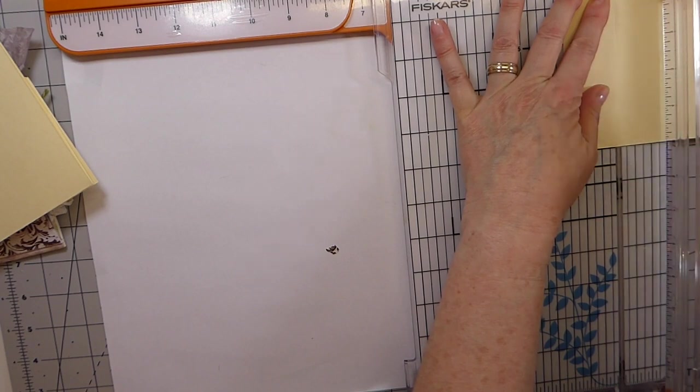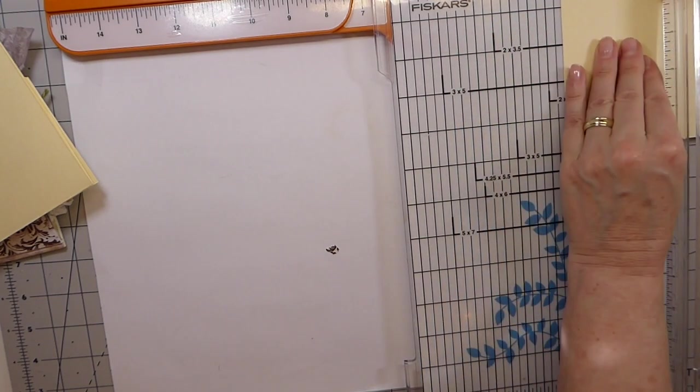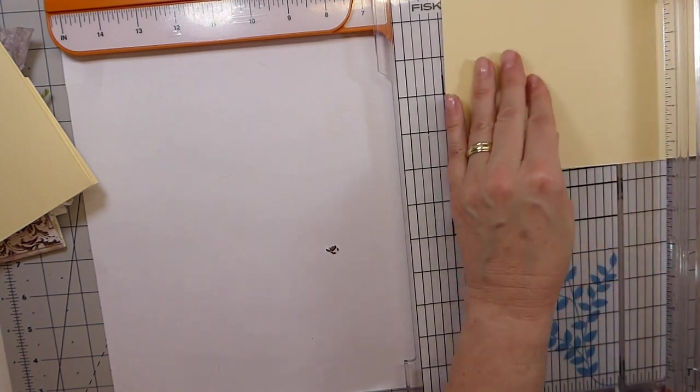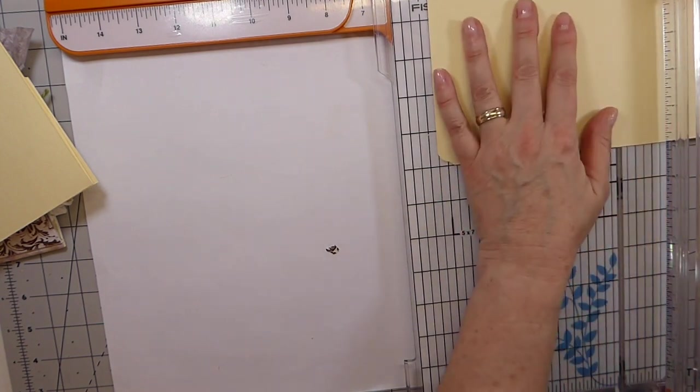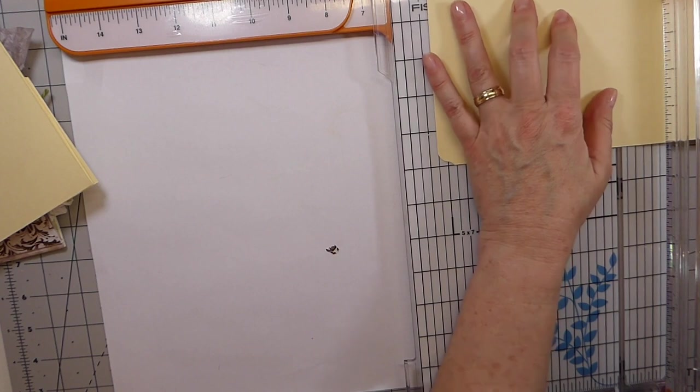Starting with that longest piece, we're going to score that at one and a half inches. If you find it easier with your scoreboard, do that. One and a half, and then we're going to put it at five and a quarter.